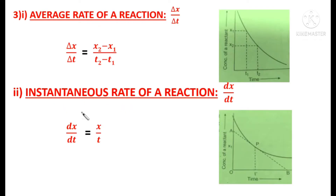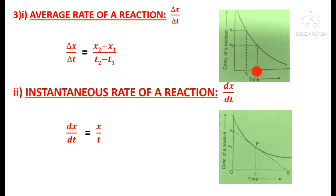Next, we shall see two different types of rate of reaction: average rate of reaction and instantaneous rate of reaction. The average rate of reaction is measured over a long period of time. Here we take two concentrations x₁ and x₂ — the concentrations of the reactant measured at two different time intervals t₁ and t₂. The formula is: Average rate = Δx/Δt = (x₂ − x₁)/(t₂ − t₁).